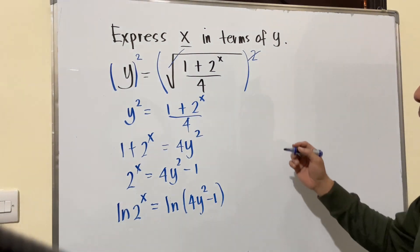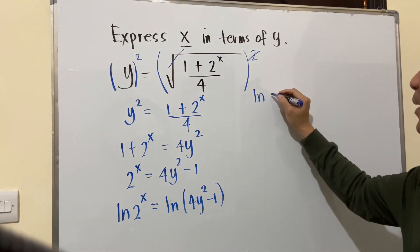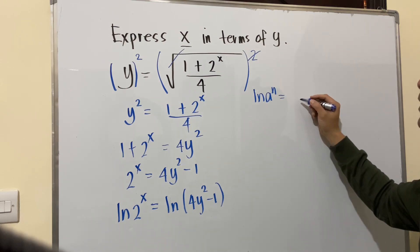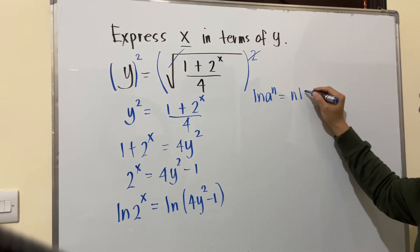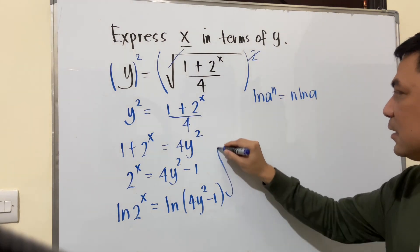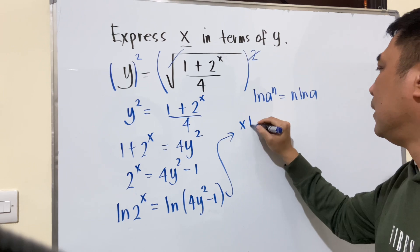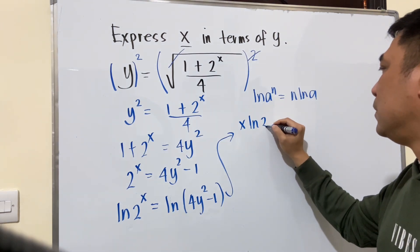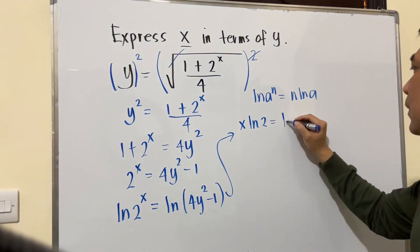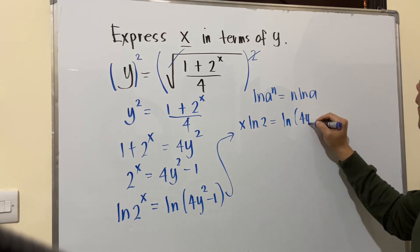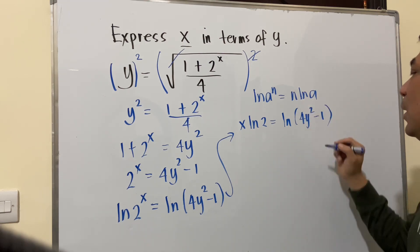Properties of logarithms: we know for a fact that if you have ln A raised to n, this equals n ln A. So in this case, we can rewrite this one as x ln 2 equals ln of 4y squared minus 1.